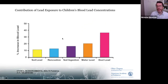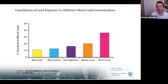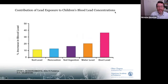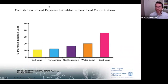Looking at percentage contributions to blood lead levels, most of it comes from dust, and a lot of that dust comes from deteriorated lead paint in the house. Lead in water is not an insignificant source; however, dust is a much bigger concern.